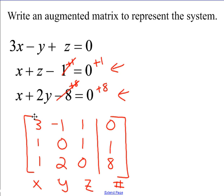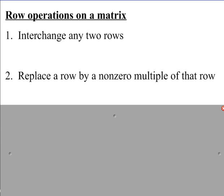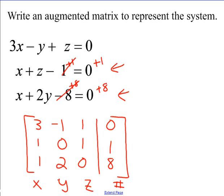We are going to create this matrix and then eventually try to solve it using row operations on a matrix. These are very similar to the same things you can do with a system of equations. One valid row operation is to interchange any two rows — this is basically just putting one equation above another, which doesn't change the system at all. The next row operation is to replace a row by a non-zero multiple of that row. For example, I could replace a row by 3 times the row, multiplying each term by that number.